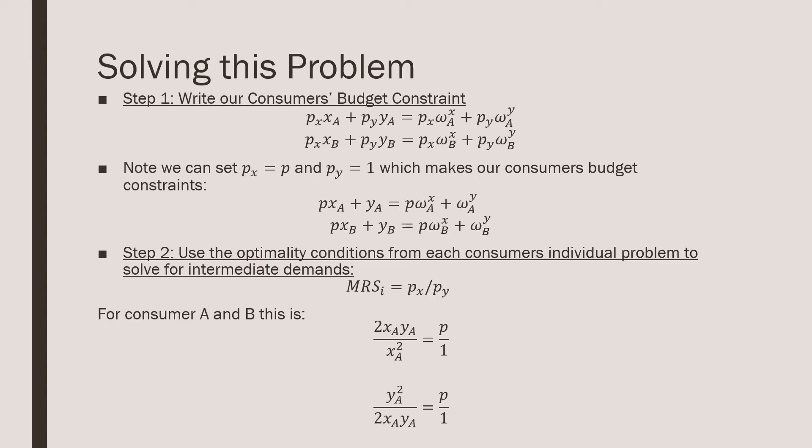Since we're solving for a competitive equilibrium, we're going to have prices in our model. First, we have to write out our consumer's budget constraint. Each consumer is going to have their own budgets and they have their endowments. We're going to imagine that there is a price between them. We're artificially imposing it first, and then we're going to derive the true prices. Note, there's a theorem for this, but we can set PX to just P and PY to 1. So we have the liberty to normalize one of our goods.